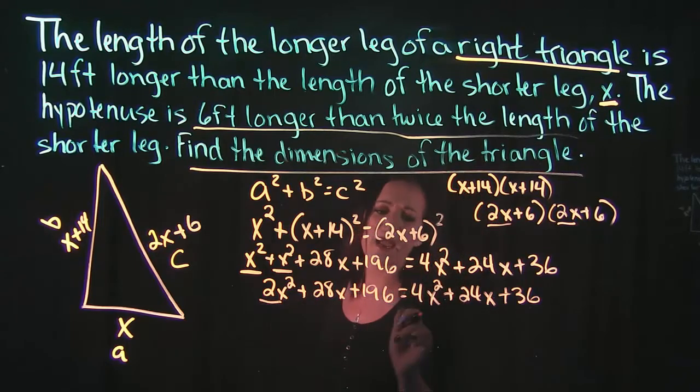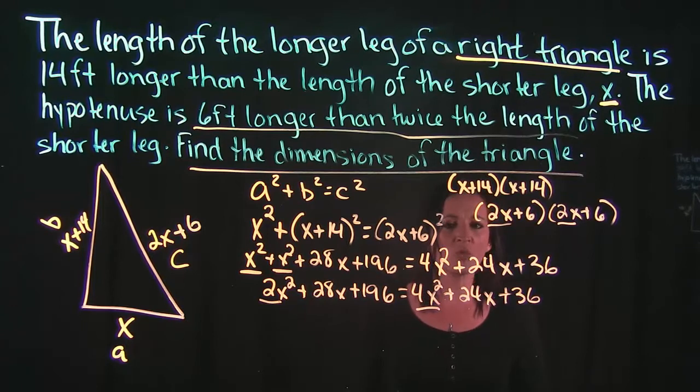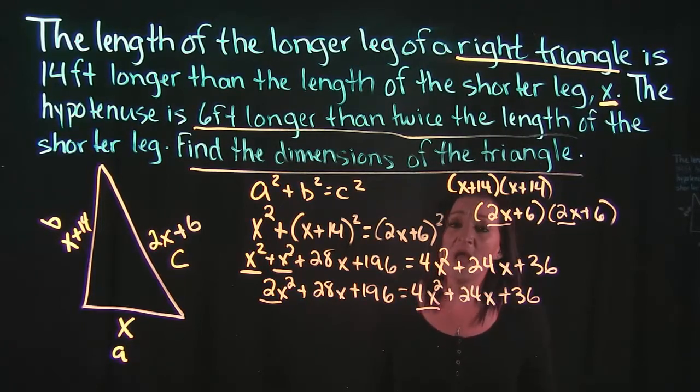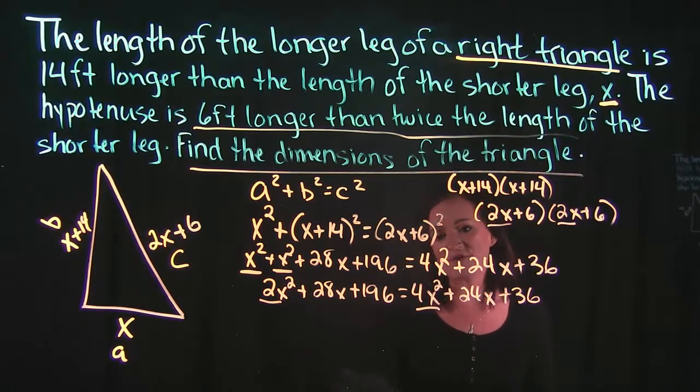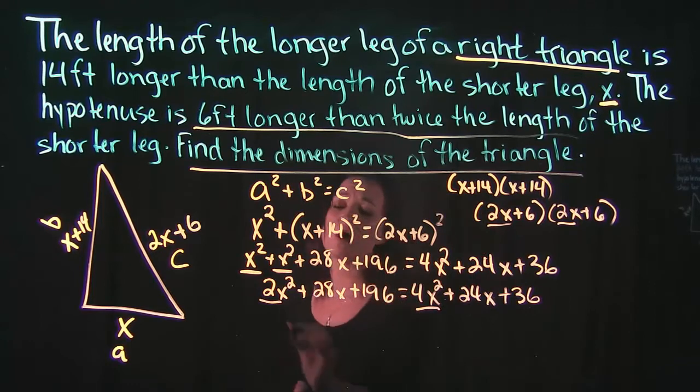I also see that I have these quadratic terms here so they're squared. So I know I'm working with a quadratic formula. Because of that, that tells me I need to move everything over to one side of this equation so it could be set equal to zero so we can try and factor and solve.